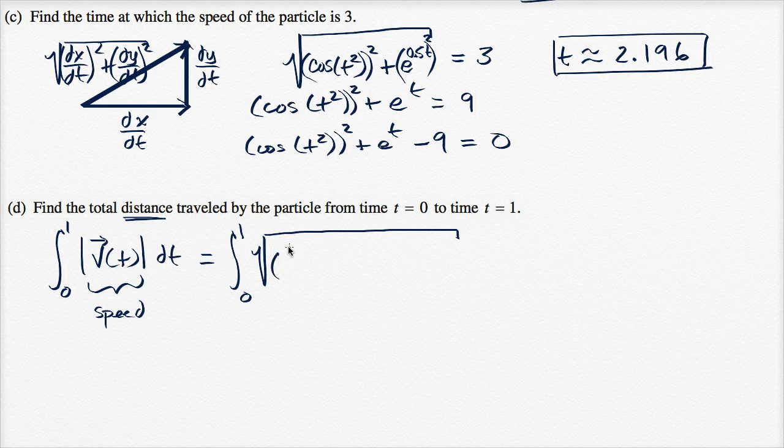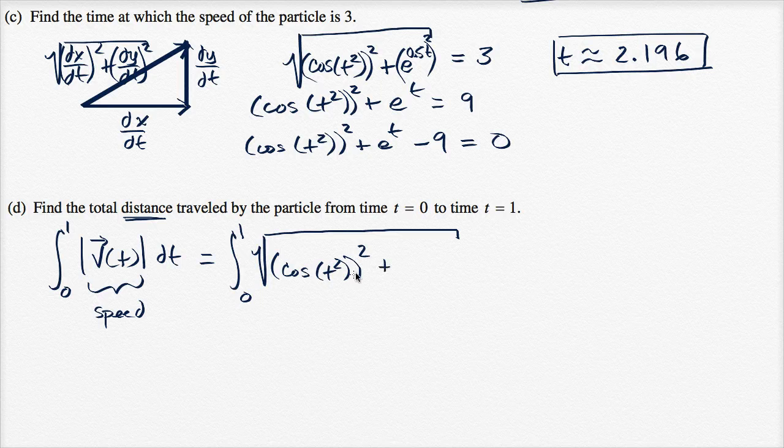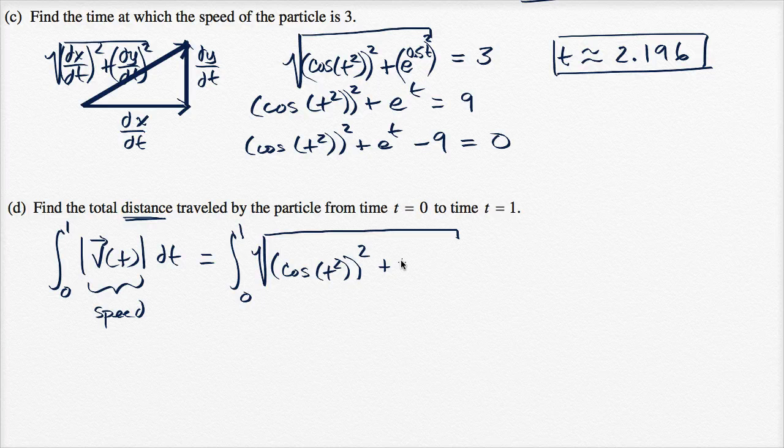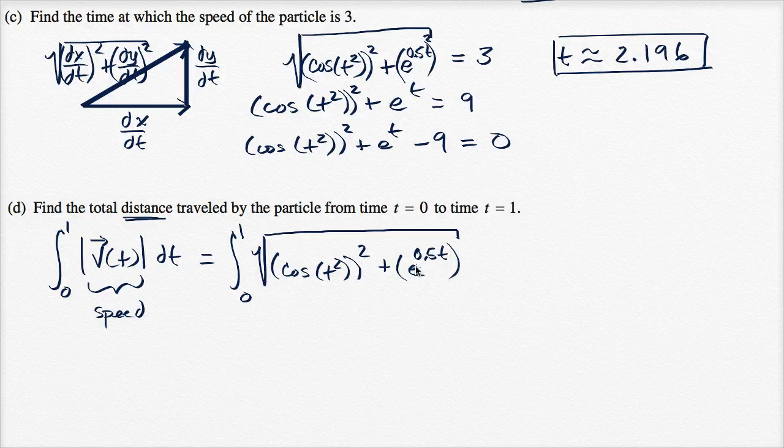the x component of the velocity, cosine of t squared squared, let me put the other parentheses there, squared, plus the y component of our velocity squared. The rate of change of y with respect to time squared. So plus e to the zero point five t, that's the rate of change of y with respect to time, or the y component of velocity. We're going to square that. This is our expression for our speed as a function of time.